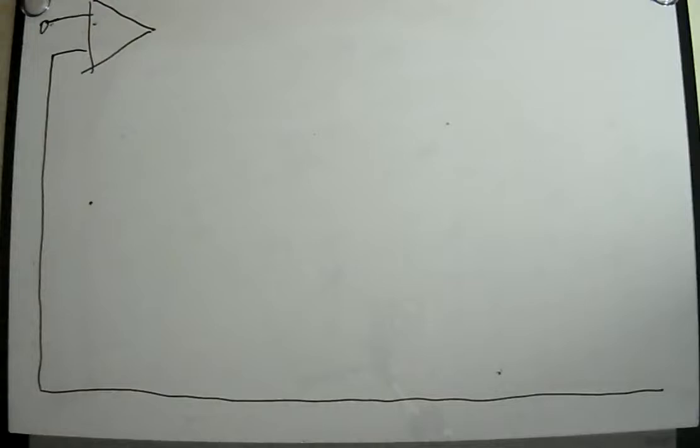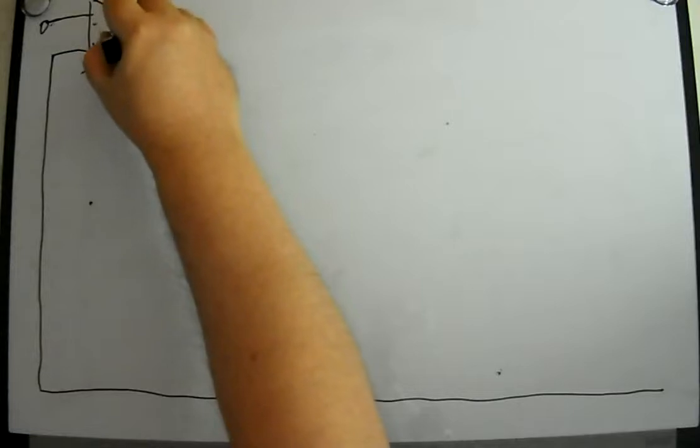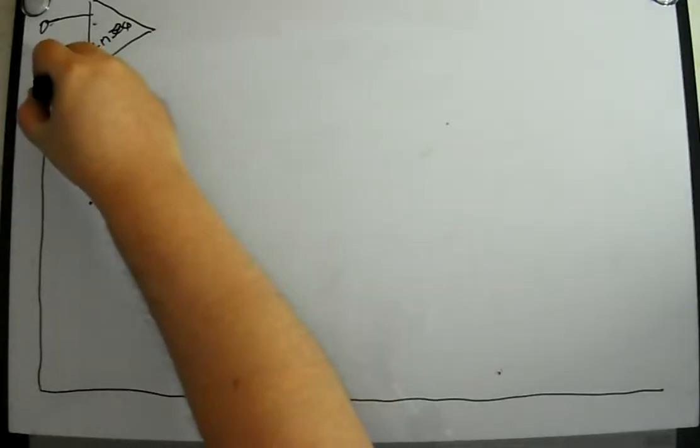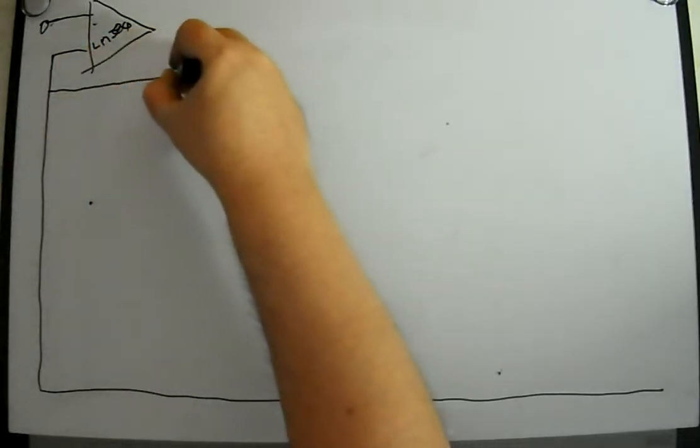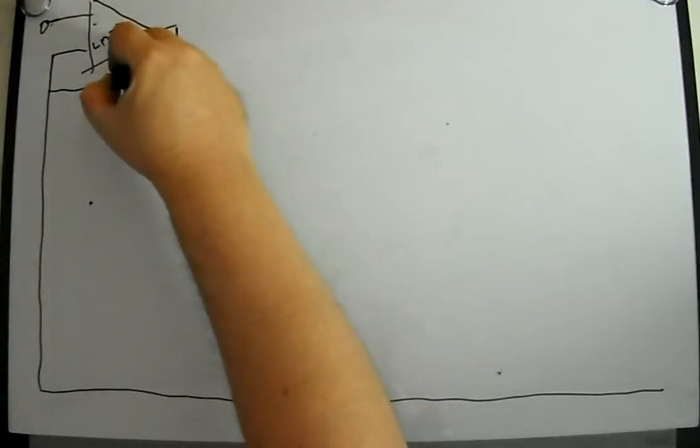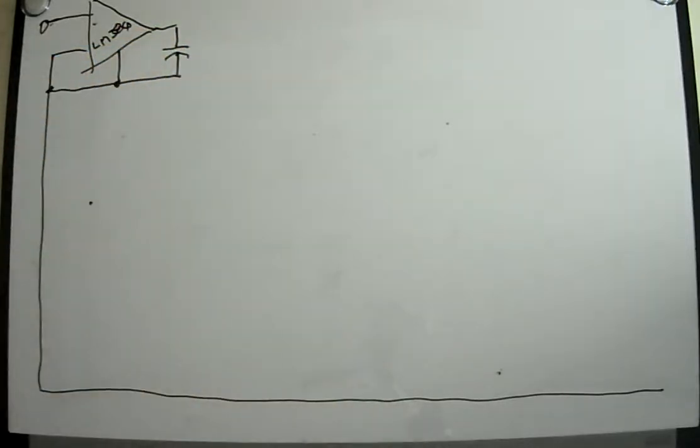So what we're going to start off with is an amplifier called an LM386. Some of you may recognize the LM386. It's real popular with musicians for making little flea power guitar amplifiers. Some people have made headphone amplifiers with them. I don't know if I would want to use it for a headphone amplifier, but you can use it for that as well. It's a little amplifier that runs off a single nine volt battery and puts out about a watt of power.